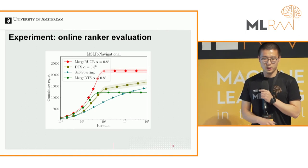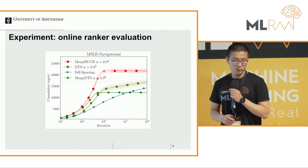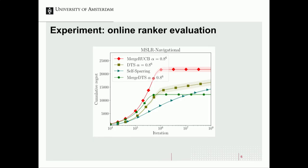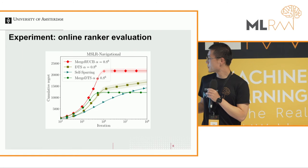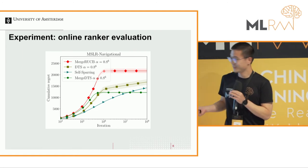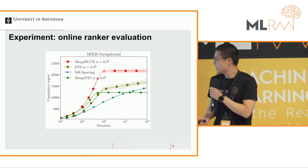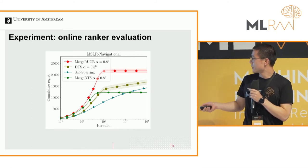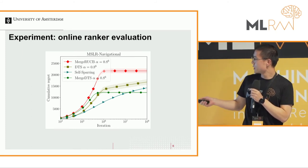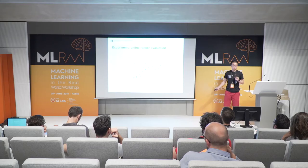We evaluate our algorithm on the application of online ranker evaluation — you have many rankers for a search system and want to know which one is the best. Our algorithm performs the best: this line is our algorithm. This shows the cumulative regret, so lower is better, and you can see our algorithm converges quite fast.